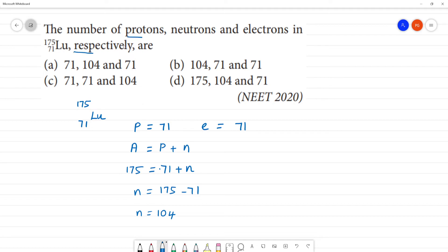So the number of protons is 71, neutrons is 104, and electrons is 71 respectively. That corresponds to option A, which is the answer.